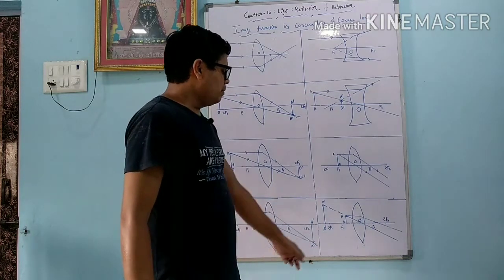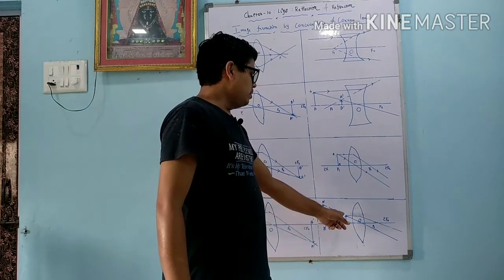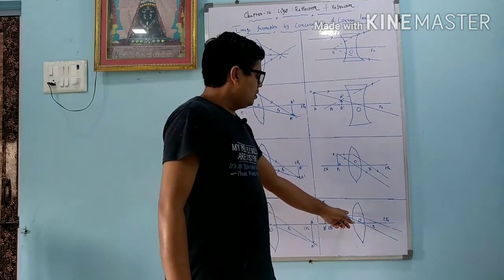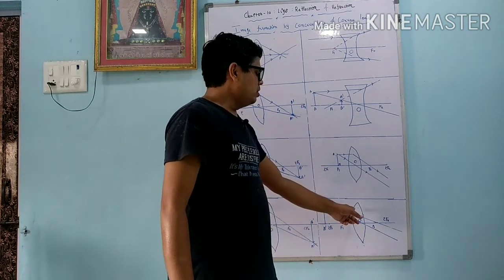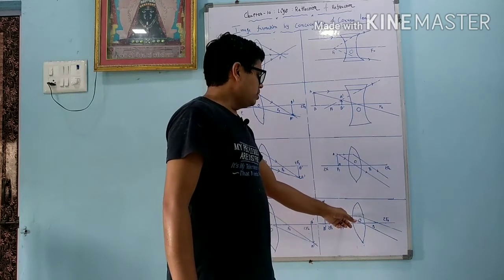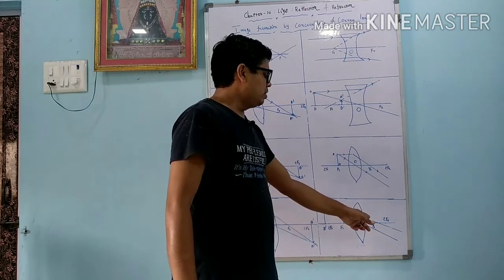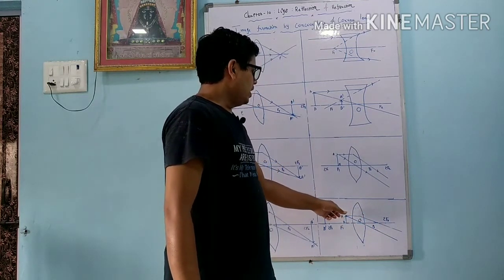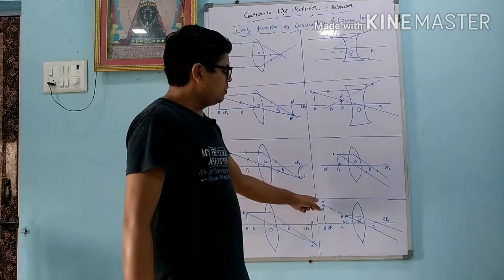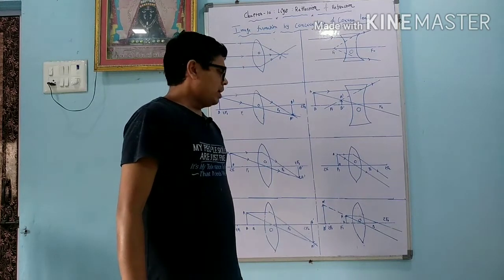This is most important — when we put the object between f1 and the optical center, two rays are passed. One ray is going parallel to the principal axis; after refraction, it goes in the other direction of the lens. Another ray passes from the optical center of the lens and goes to the other side. We get the image by extending the line on the same side of the lens. So we get here a virtual and erect image, and the size of the image is magnified.